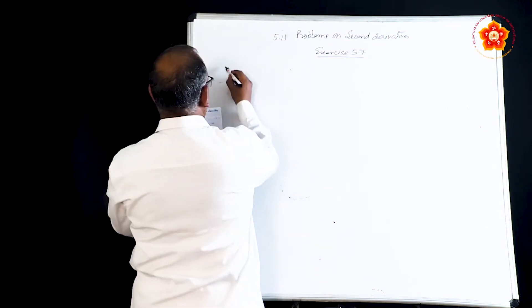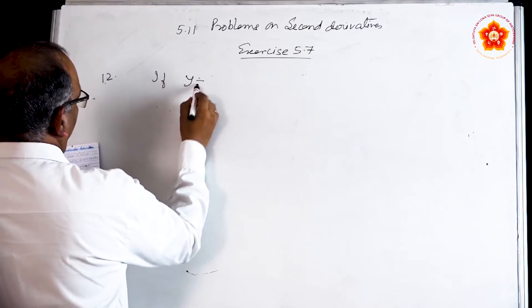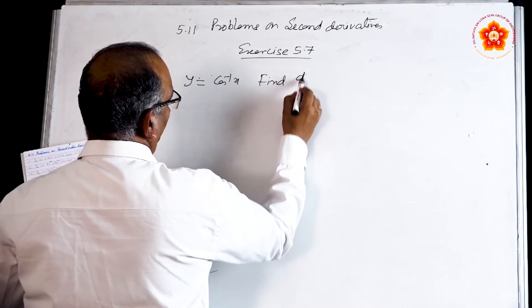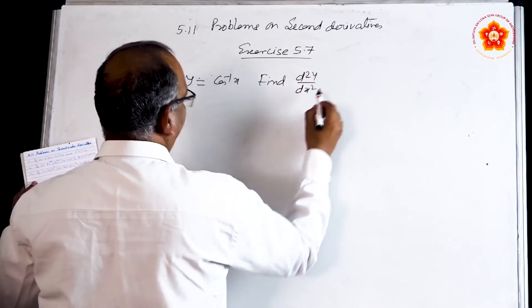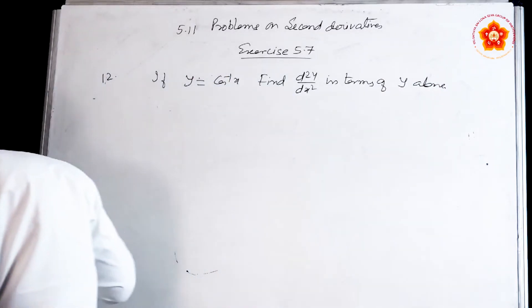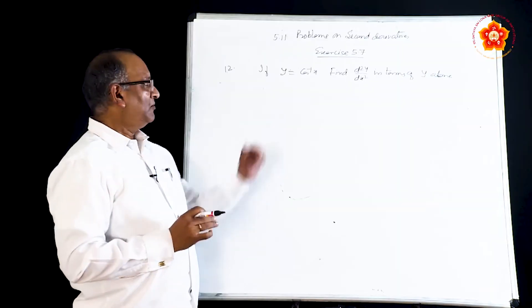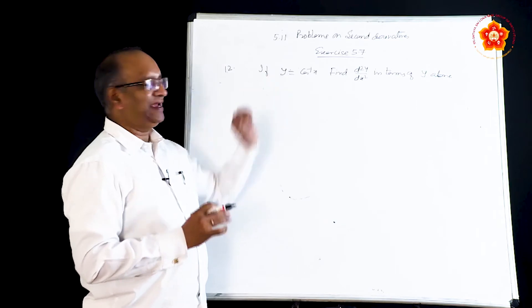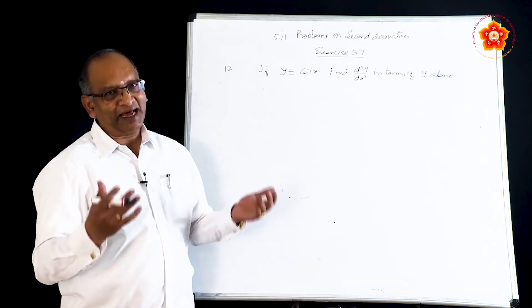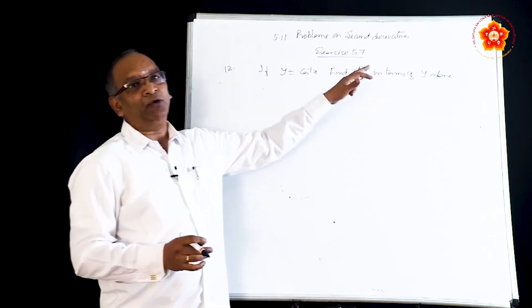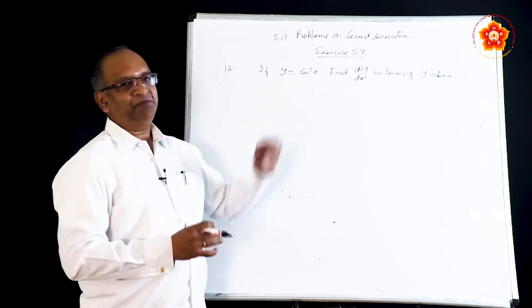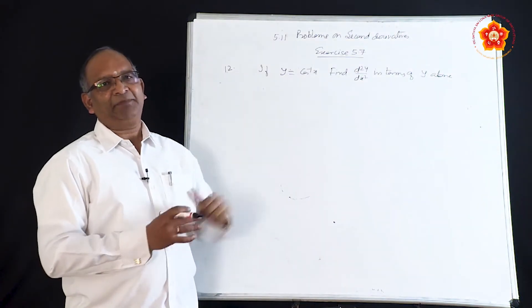Problem number 12: if y = cos⁻¹x, find d²y/dx² in terms of y alone. This is a different kind of question because y is a function of x, so when you find the derivative you normally get the answer in terms of x. But here he wants the answer in terms of y alone. So what is to be done? Very simply, the function is given with y as the dependent variable; interchange the roles of x and y.